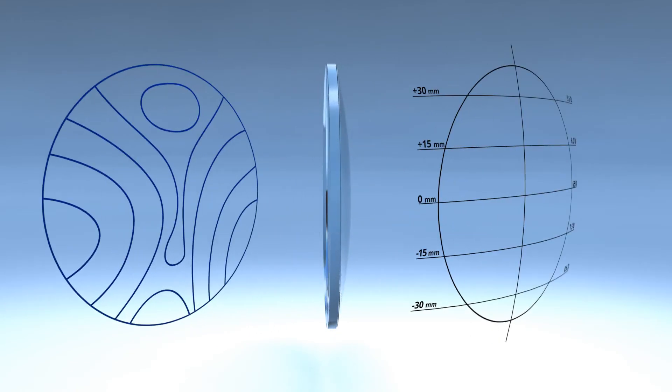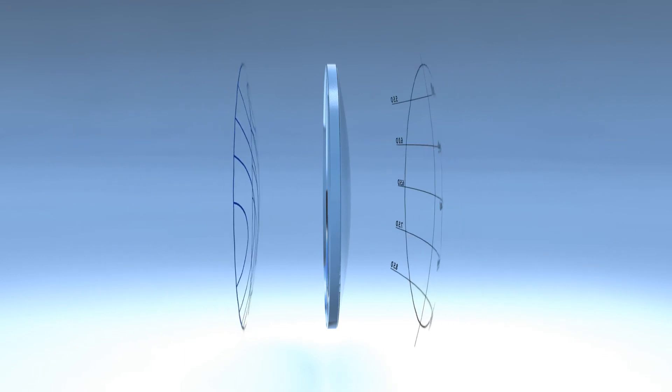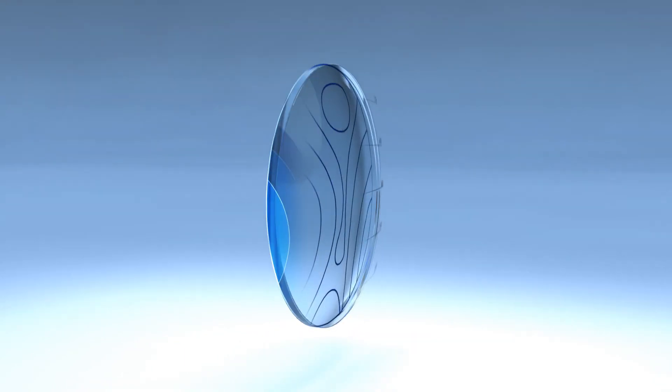The combination of curves on both sides of the lens creates the finished camber progressive lens.